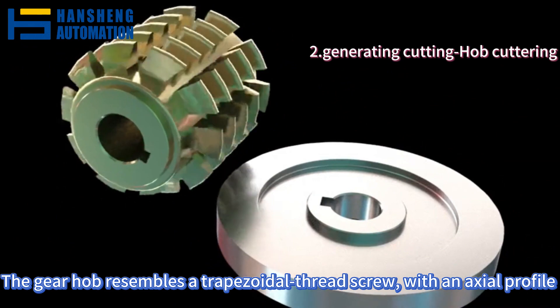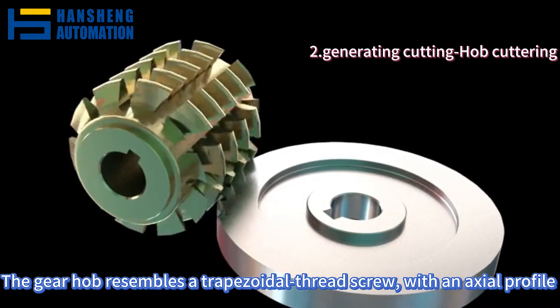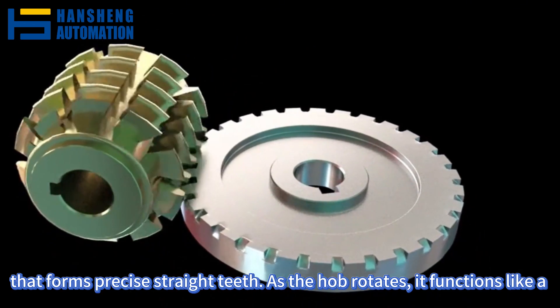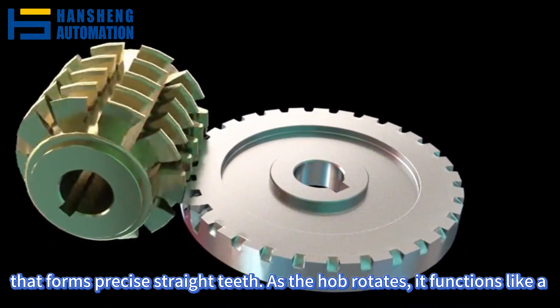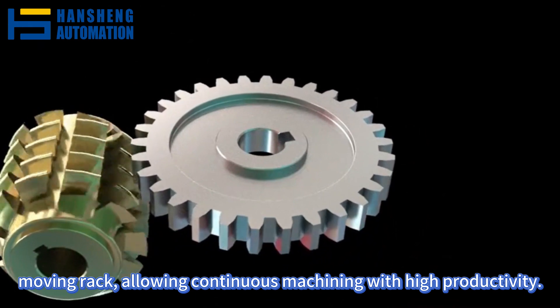The gear hob resembles a trapezoidal thread screw with an axial profile that forms precise straight teeth. As the hob rotates, it functions like a moving rack, allowing continuous machining with high productivity.